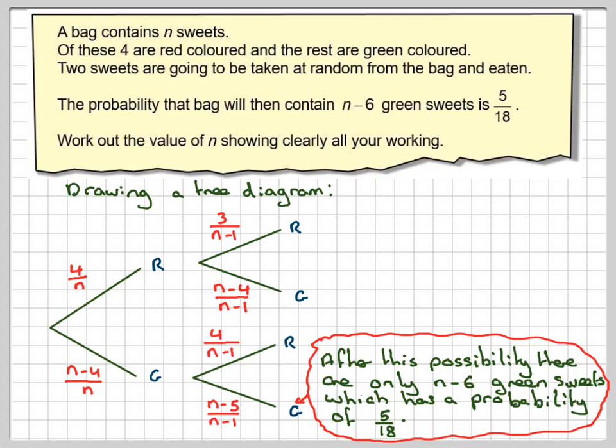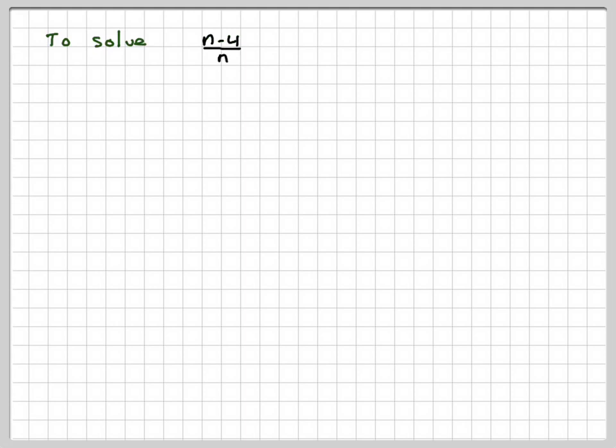We can now form an equation, because we know this times this must be equal to 5/18. So the probability of a green and a green is n minus 4 over n times n minus 5 over n minus 1, and that has to be equal to 5/18. So we've now got an equation in n, which we need to solve.